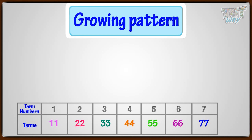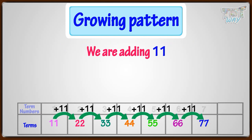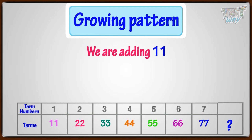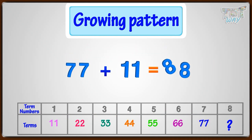What should be the next term in this growing pattern? Here, with every successive term, we are adding 11 to the term. So to find out the next term or the 8th term, we will add 11 to 77. 77 plus 11, we get 88. So the 8th term would be 88.